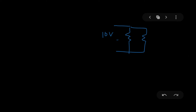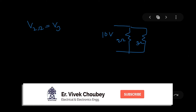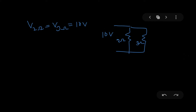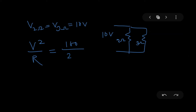Now let's talk about a parallel circuit. The same two resistors — 2Ω and 3Ω — are connected in parallel across a 10 volt source. In a parallel circuit, the voltage across 2Ω equals the voltage across 3Ω, and both equal the source voltage of 10 volts. Since V is known, I can simply use V²/R: V² = 100, divided by 2 gives 50 watts. Similarly for 3Ω. So in a parallel circuit, V²/R is the recommended technique.